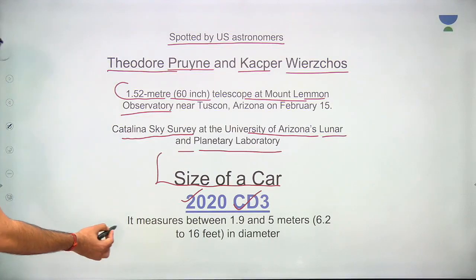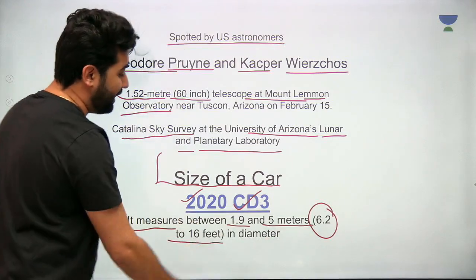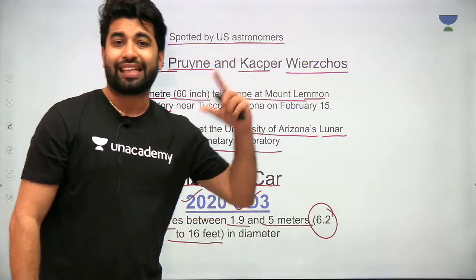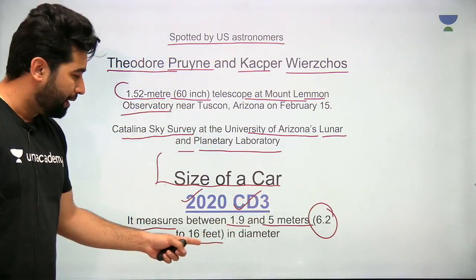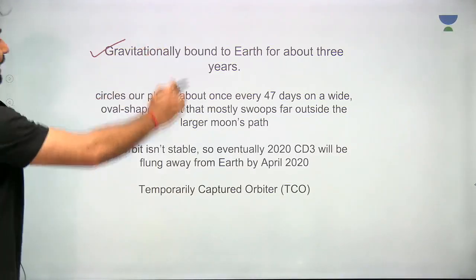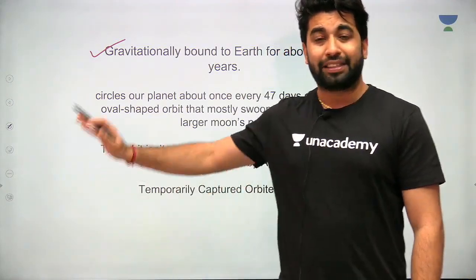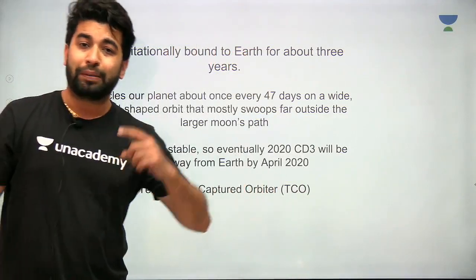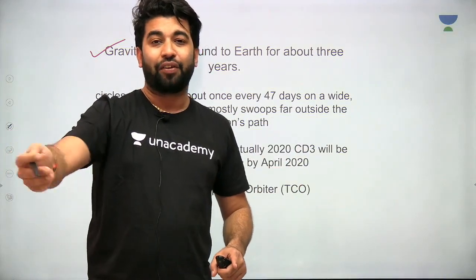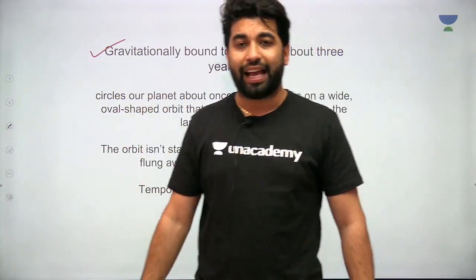Regarding its size — the moon we see every day is very big compared to this object. This mini moon, the second moon of the Earth, is the size of a car. It measures between 1.9 and 5 meters, roughly 6.2 to 16 feet in diameter — it's a spherical object. It was catalogued as 2020 CD3 because 2020 is the year it was discovered, on 15th February.